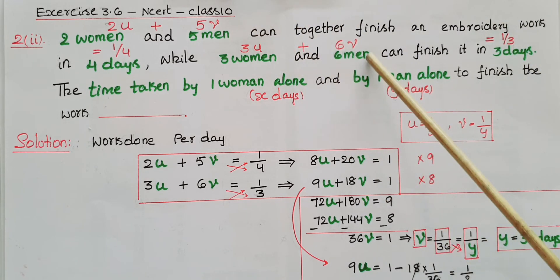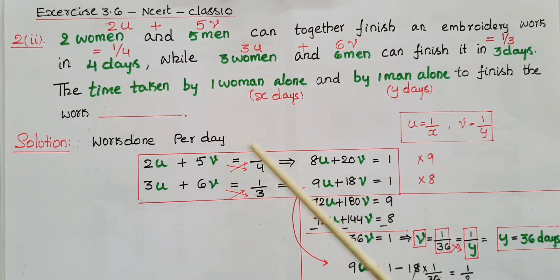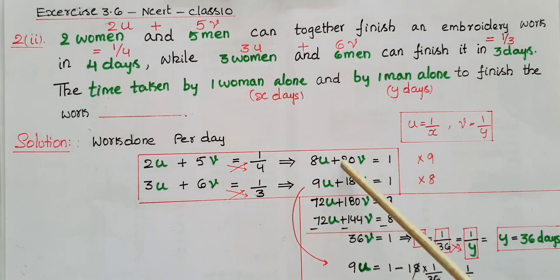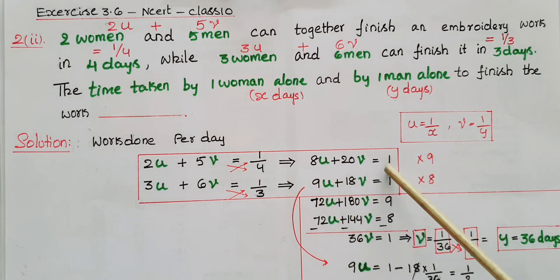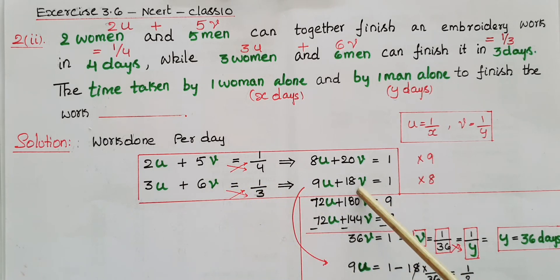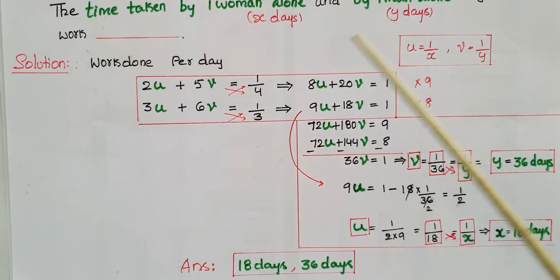Now cross-multiply to clear the fractions. Multiply the first equation by 4: eight-u plus twenty-v equals one. Multiply the second equation by 3: nine-u plus eighteen-v equals one.